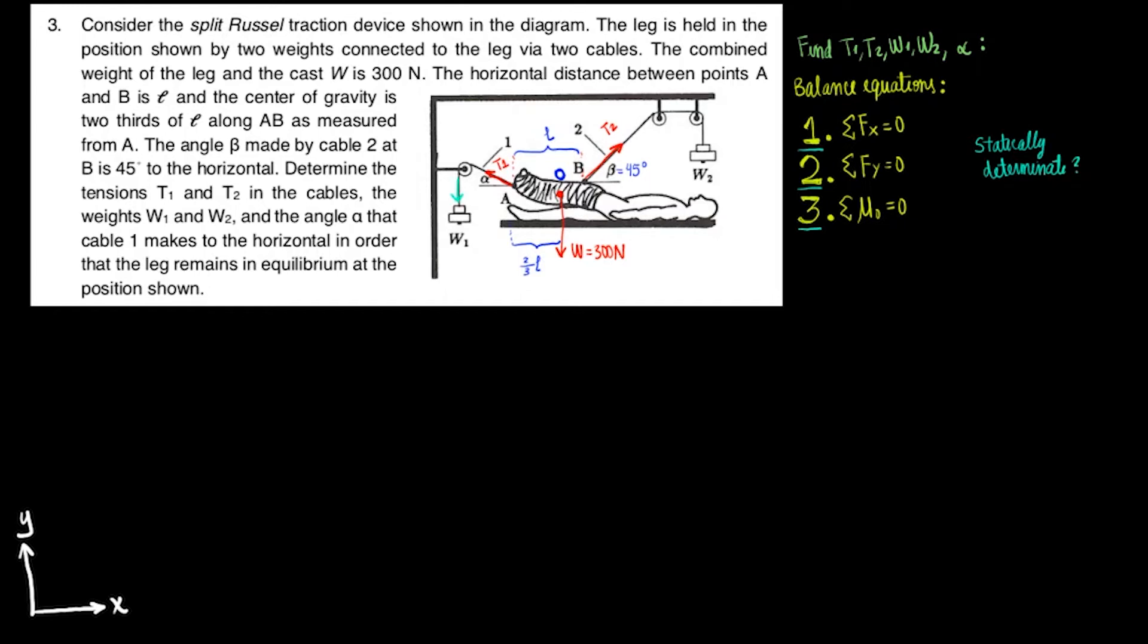The tension T1 is actually equal to the weight W1 that's pulling on the cable. Similarly, T2 is equal to W2. Thus, in reality, we only have three unknowns for the three equations. Let's start solving. Feel free to pause at any time to try the problem on your own.